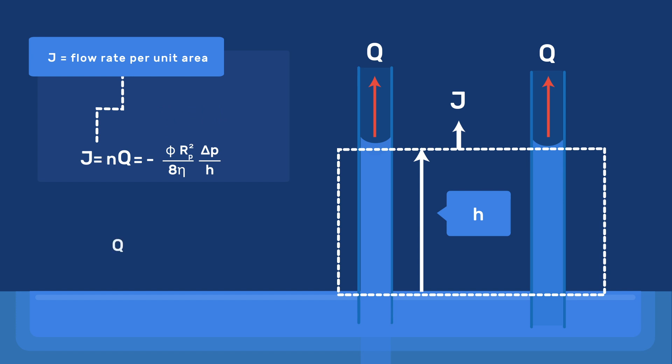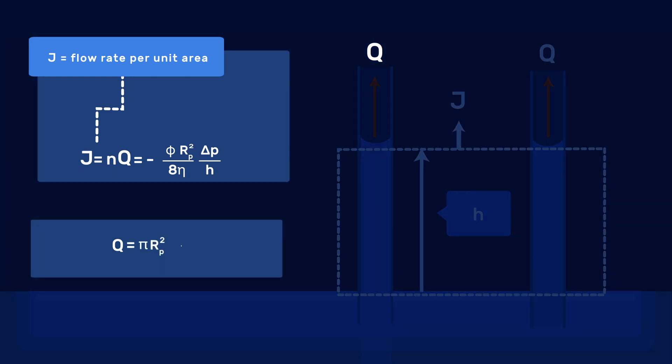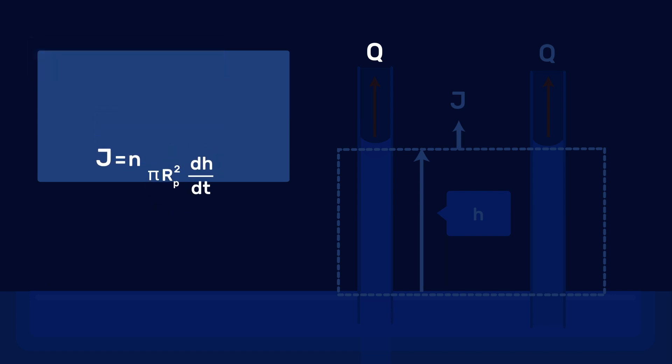Apart from this, the flow rate q in a single pore is related to the rate of rise dh over dt. So the total flux into the porous body becomes j equals n pi rp to the power 2 dh over dt. As before, this is better written by introducing the porosity so that j equals phi dh over dt.